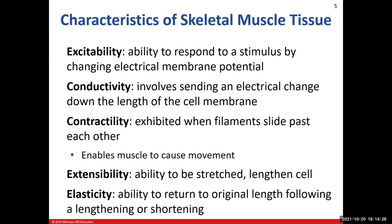Now let's talk about characteristics of skeletal muscle tissue. The first two characteristics look similar to nervous tissue characteristics — that's why we learned Chapter 12 first. Skeletal muscle is excitable, meaning it can respond to a stimulus by changing the electrical membrane potential. Just like neurons have a resting membrane potential, so does skeletal muscle, and we generate an action potential to cause a muscle contraction.